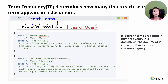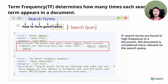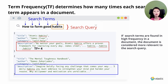For example, let's look at the frequency for the term 'habits'. Here we have two documents that mention the term habits. In the first document, the term habits appears four times in the description field. In the second document, the same term appears only one time. So in this example, the first document is given a higher score and is placed higher in the search results.